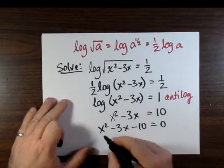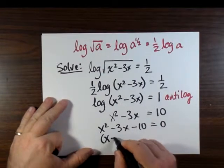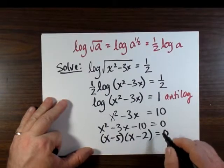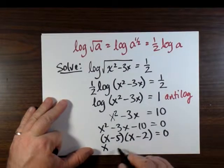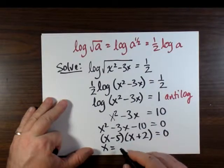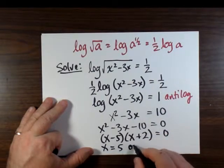And notice this becomes a quadratic, which factors nicely. x minus 5 multiplied by x plus 2 equals 0. So x equals 5 is one such answer and the other is x equals 2.